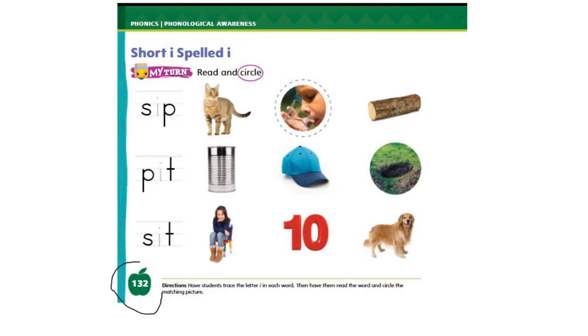Now, on page 132, we're going to do something different. We're going to read the word first and circle the picture for that word. Now, let's read the first word together. S-I-P. Sip. Sip. So, which picture shows sip? This, this, or this? Sip. When you sip, you drink slowly. So which picture shows that? It's already done for you. Yes, this picture. Sip. S-I-P. Sip. Don't forget to trace the I in the word sip.